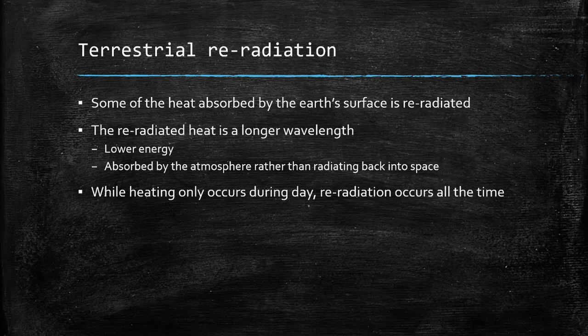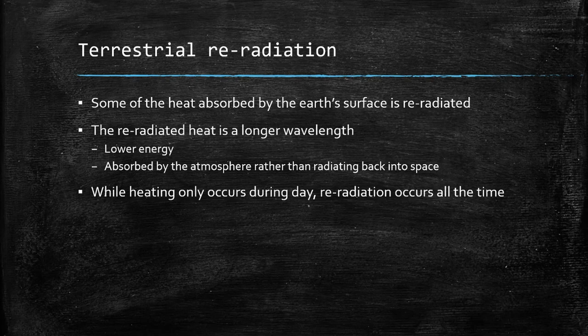As we've mentioned, all objects radiate heat, and the Earth's surface is no exception to this. This means that some of the heat absorbed from the Sun's radiation is then re-radiated back into the atmosphere. As we've also mentioned, the wavelength of radiation decreases as the energy increases. This means that the re-radiated heat is a much higher wavelength than the radiation from the Sun. This means that it is more readily absorbed by the atmosphere, rather than being radiated out into space.